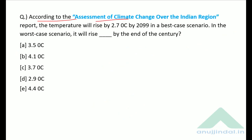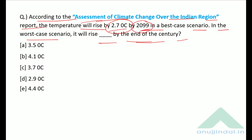According to the Assessment of Climate Change over the Indian Region report, the temperature will rise by 2.7 degrees Celsius by 2099 in the best case scenario. In the worst case scenario, it will rise by 4.4 degrees Celsius by the end of the century. Therefore, 4.4 degrees Celsius is the correct answer.